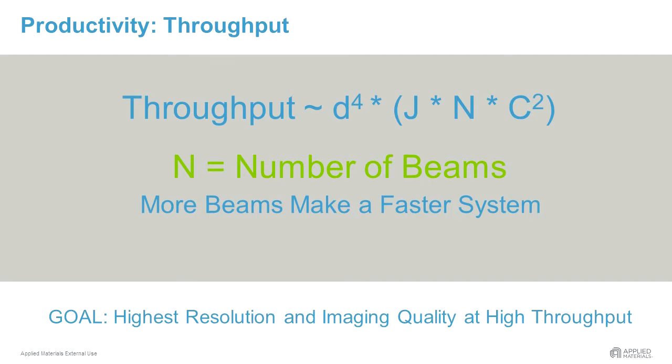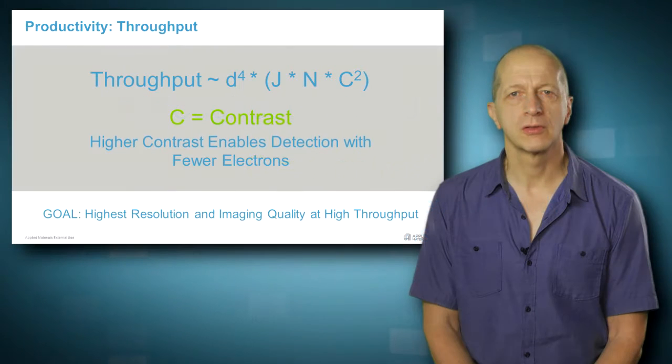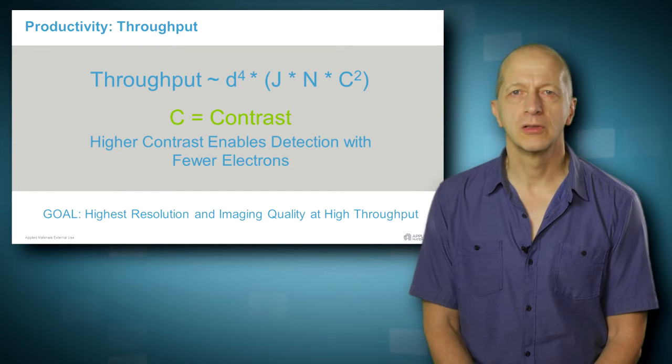Increasing the number N of beams in an inspection system will enable it to run even faster. The contrast C also plays an important role for throughput improvements. The contrast is the ratio between the signal of a defective point on the wafer and the signal of a corresponding location but without defect.